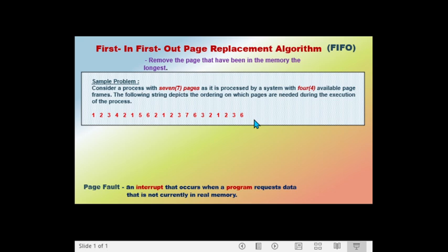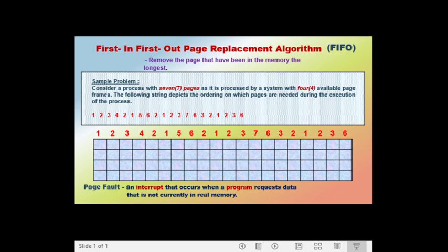As stated in the problem, we have seven pages: page 1, 2, 3, 4, 5, 6, and 7. We only have four available page frames in memory. The order in which pages are needed during execution is: 1, 2, 3, 4, 2, 1, 5, 6, 2, 1, 2, 3, 7, 6, 3, 2, 1, 2, 3, and 6. We will now compute the total number of page faults using the FIFO page replacement algorithm.